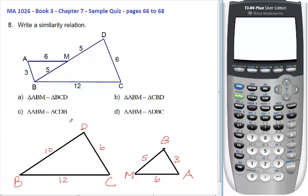We set it up such that side DB, which is 10, is to BM, which is 5, as 12 is to 6, as 6 is to 3. So biggest side over biggest side, smallest side over smallest side, mid side over mid side.